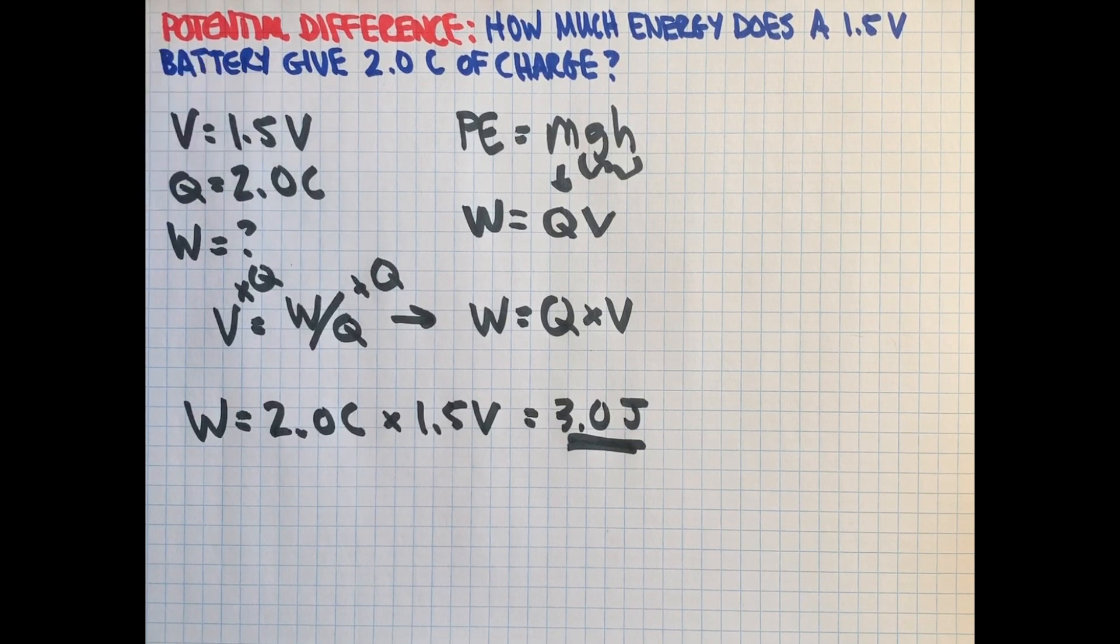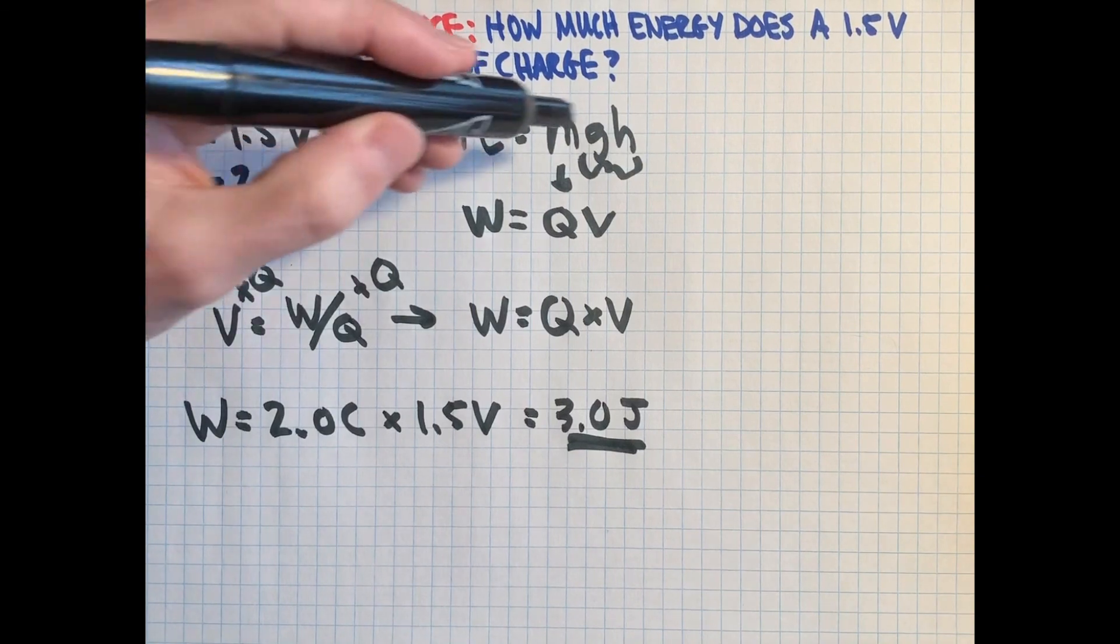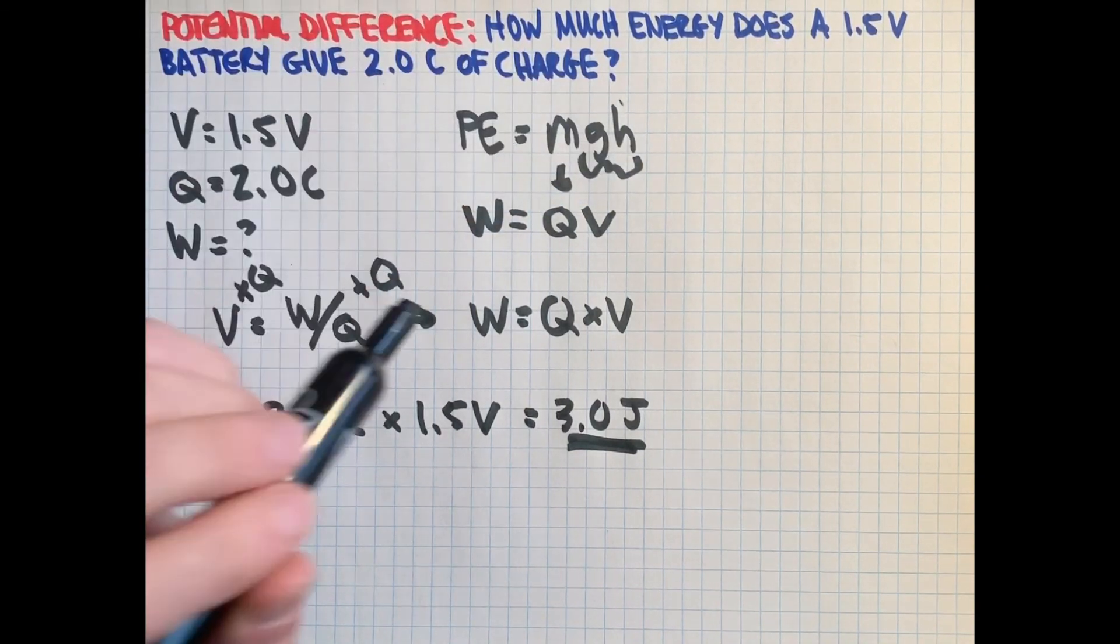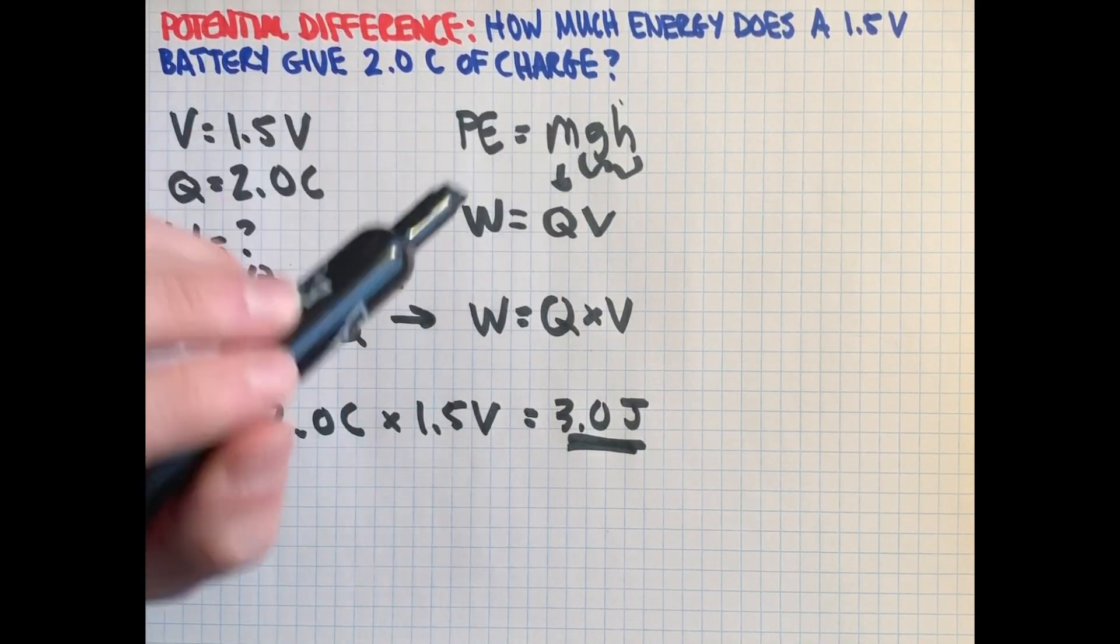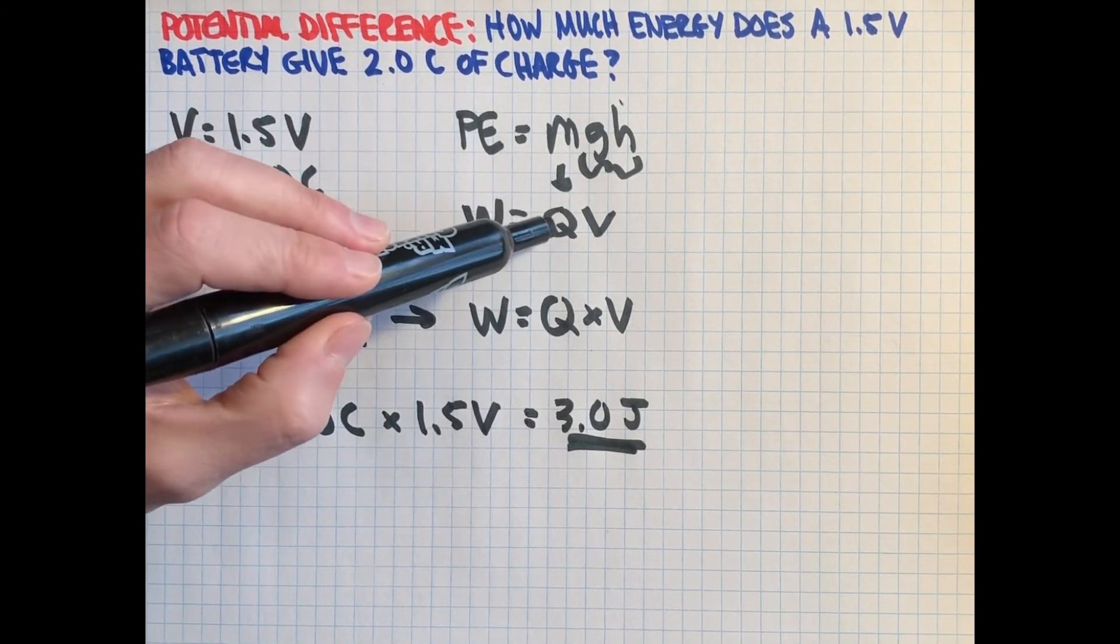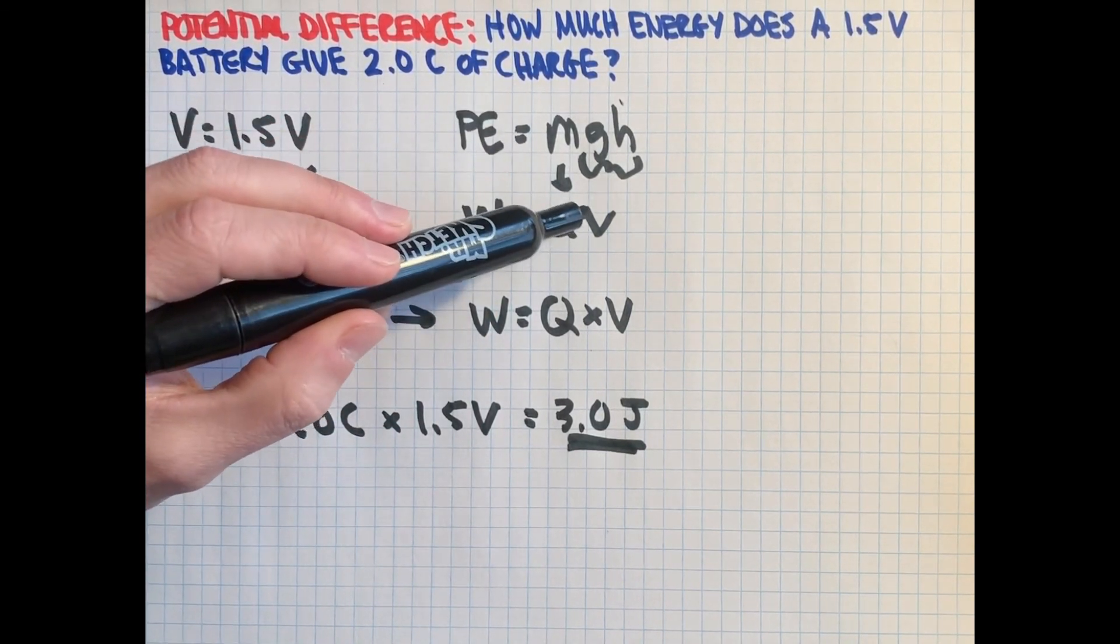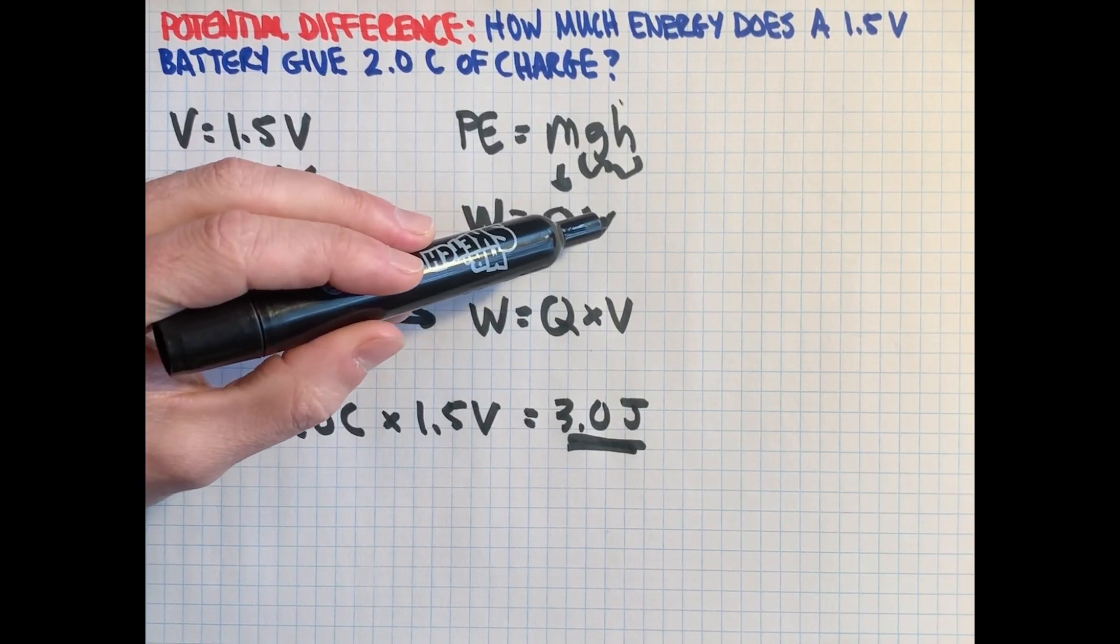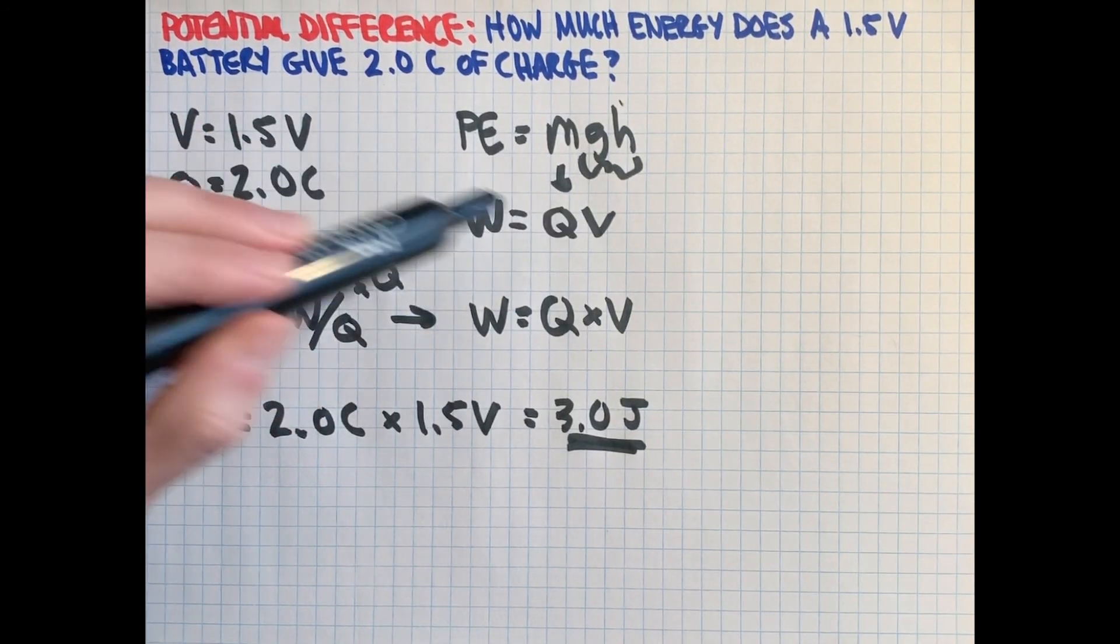But again, remember voltage is not potential energy. Even though it's called potential in there, it's the potential for potential energy. It's the GH in that equation where instead of putting a boulder at the top of a cliff in a gravitational field...